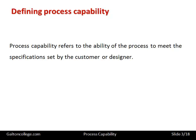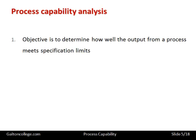We have a standard of judgment here — we can judge a system's effectiveness by its ability to meet the specifications or not to meet the specifications. The objective is to determine how well the output from a process meets the specification limits, and also to compare the total process variation and tolerance. We look at the variation in the output from the process to see if it's acceptable to the customer, because outputs may vary in terms of their attributes, their qualities, their measurements, and their suitability.